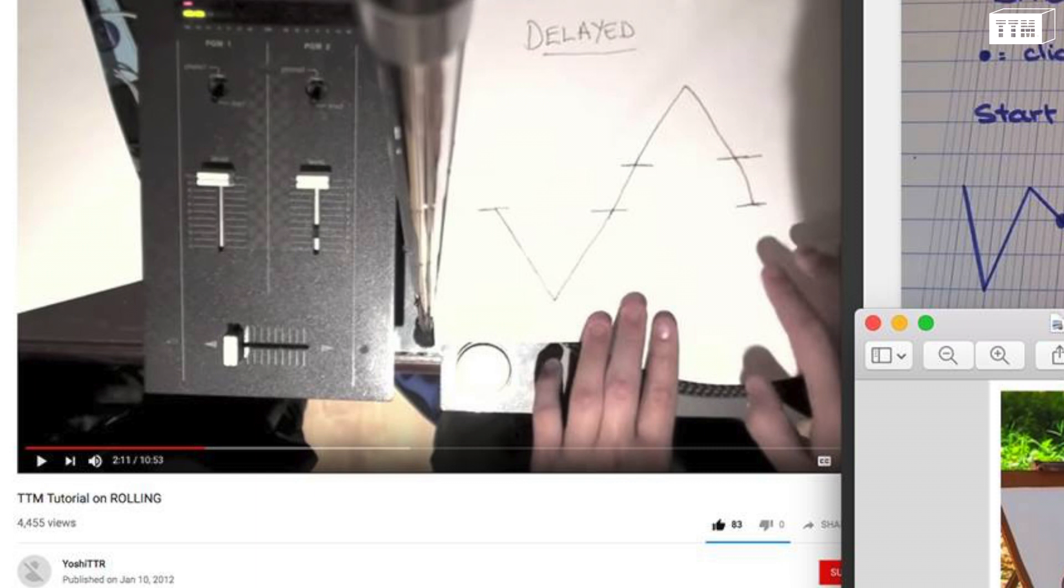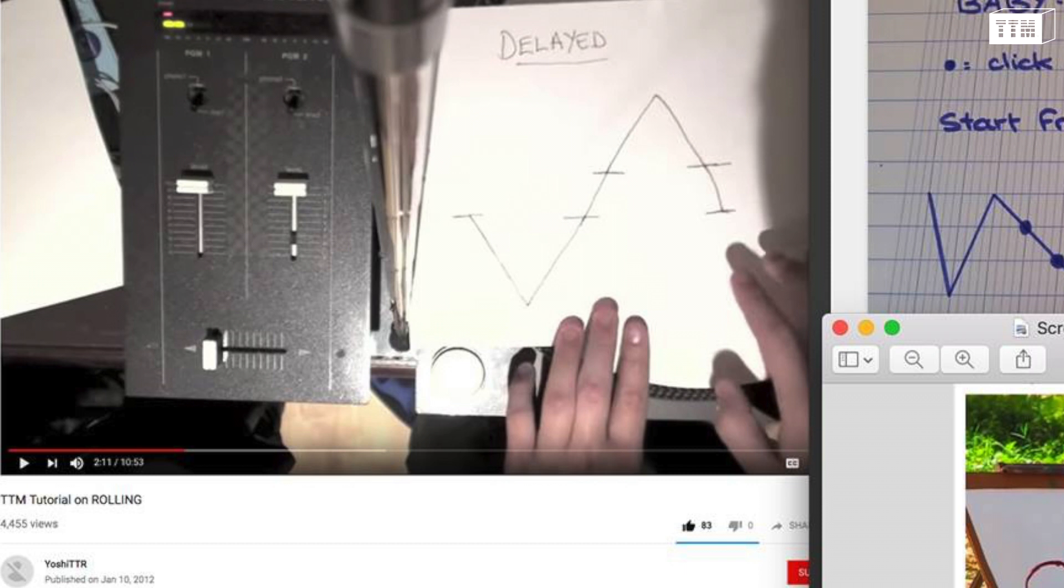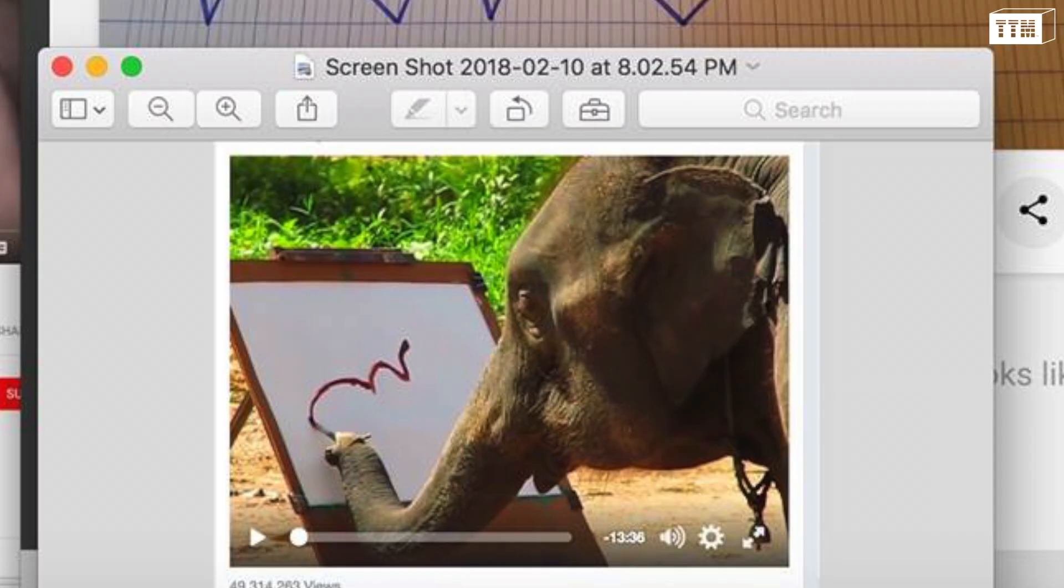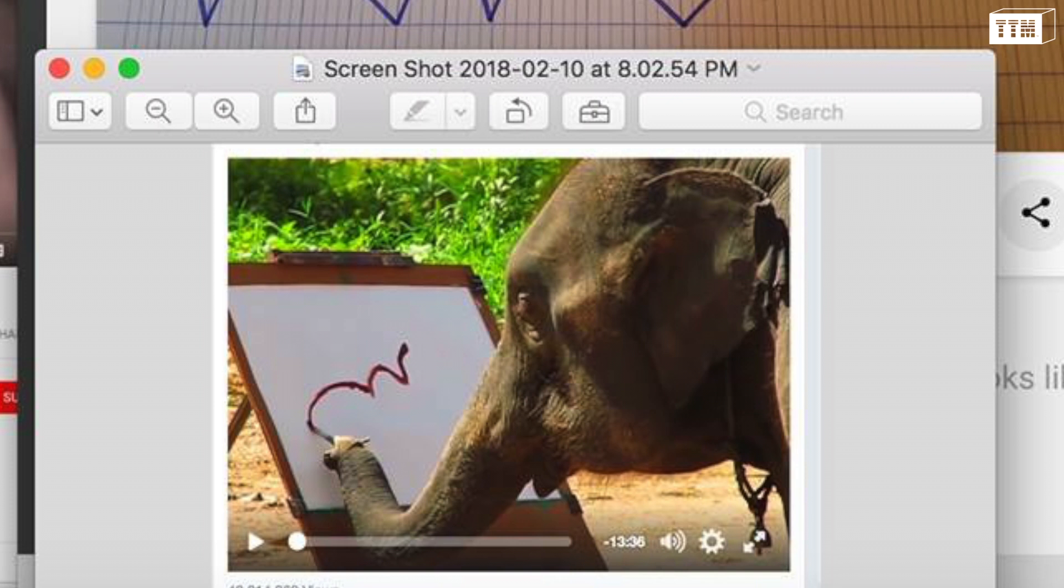At the bottom left is a delayed two click drawing featured in a YouTube tutorial from 2012 by user Yoshi TT using horizontal slashes as clicks.